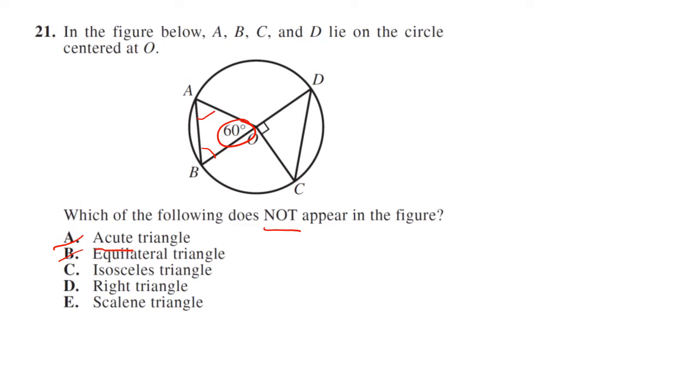Isosceles triangle, two sides are equal, so these two sides would be equal. The right triangle we obviously have a right triangle. So a scalene triangle is what we don't have, so choice E. The scalene is where you have a triangle with three unequal sides.